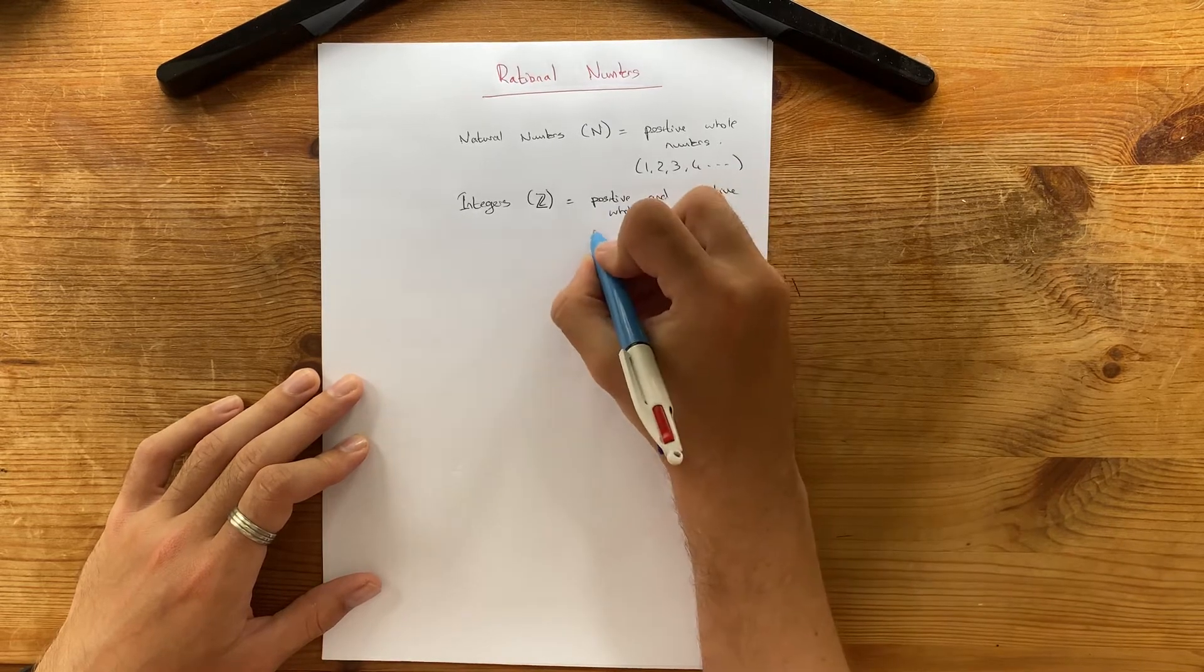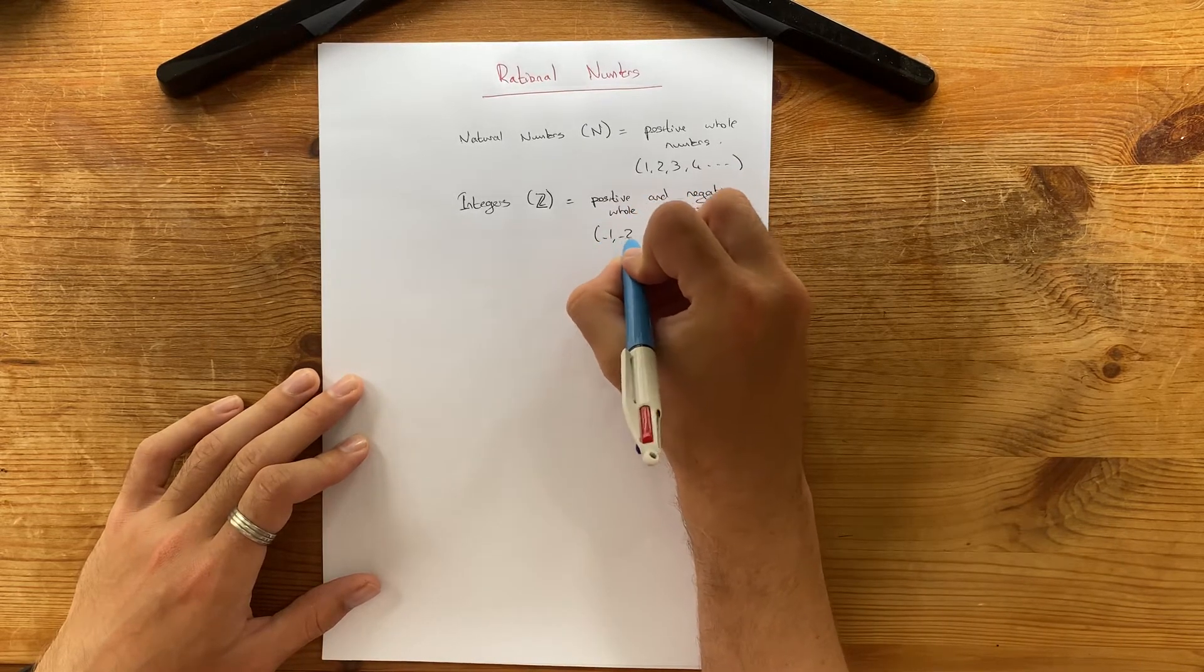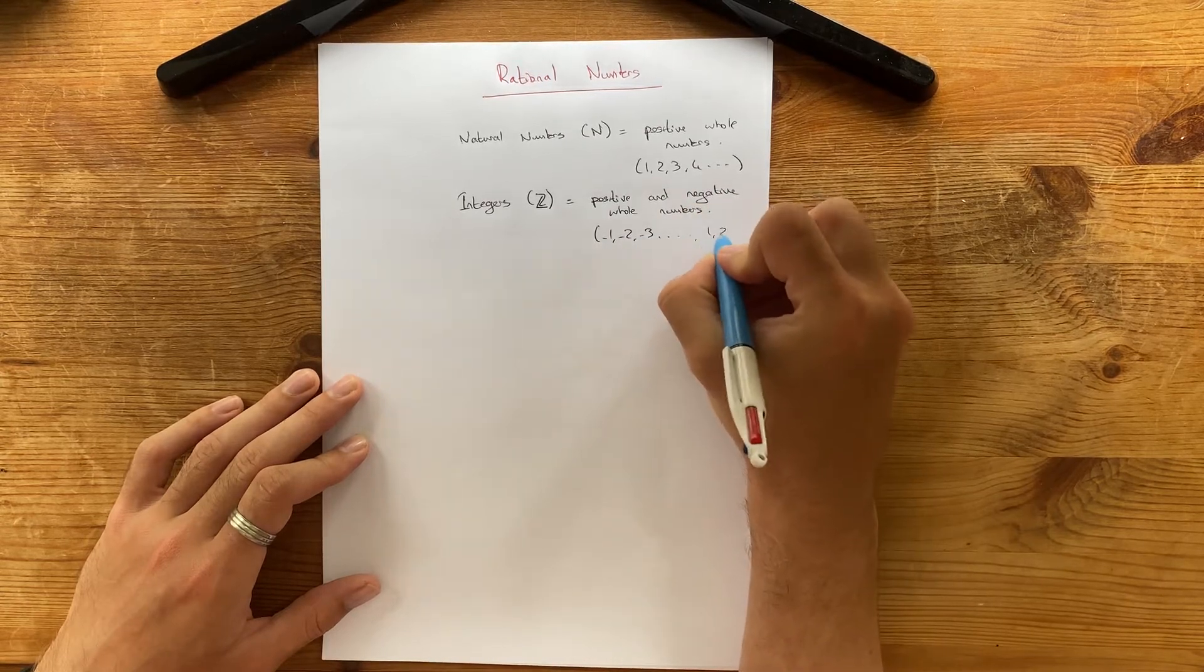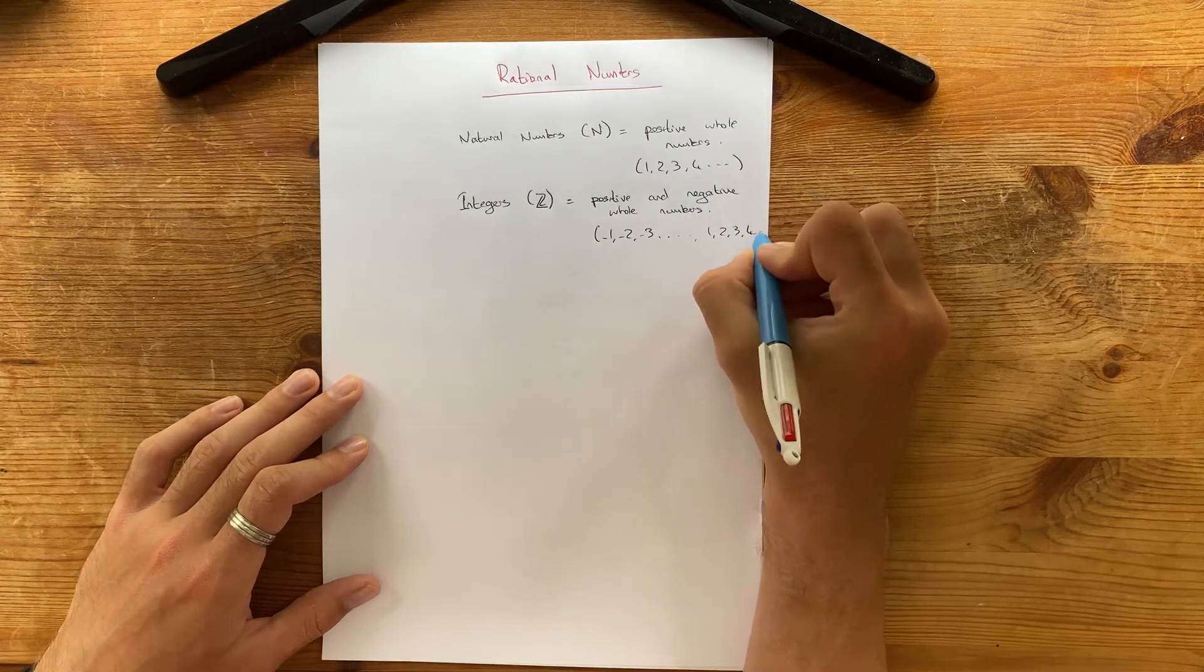And this would include minus 1, minus 2, minus 3, all the way up to minus whatever, and also 1, 2, 3, 4, and so on.